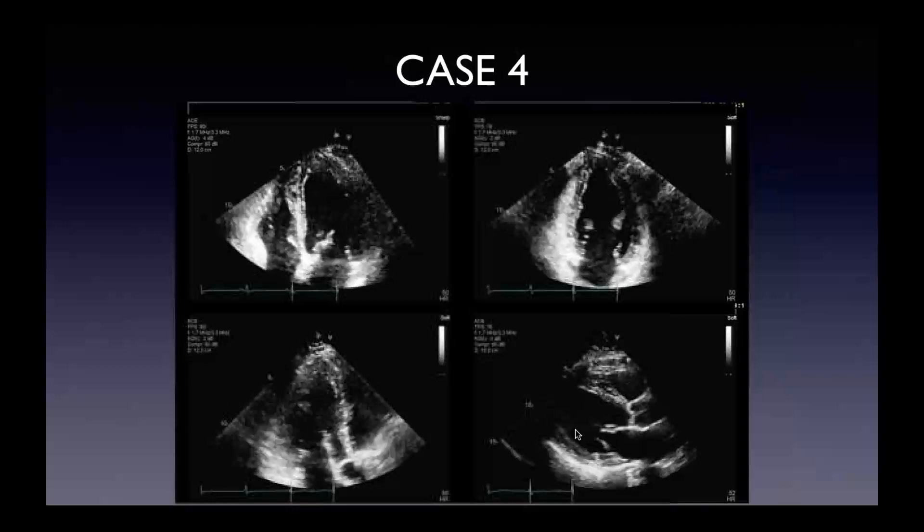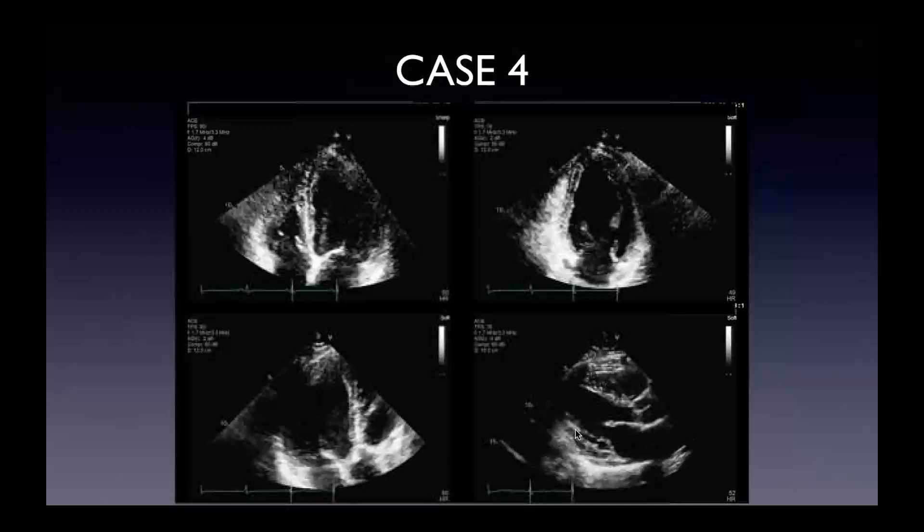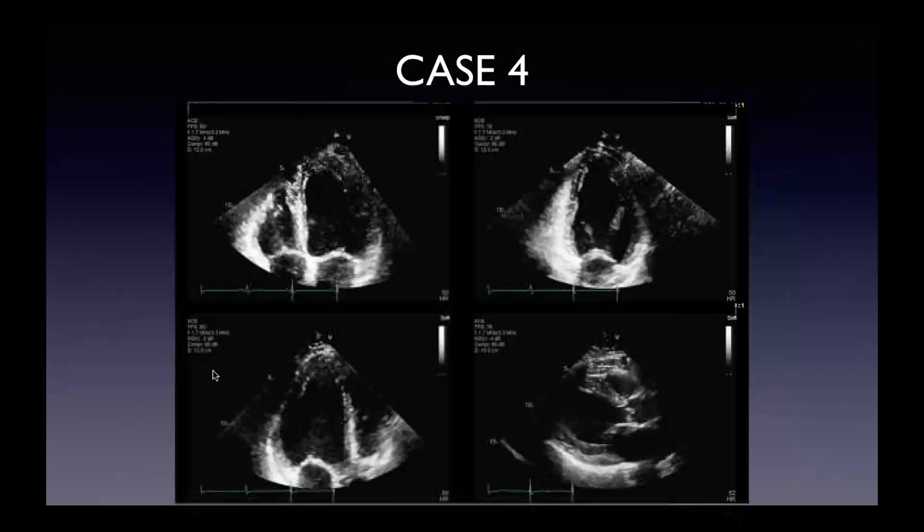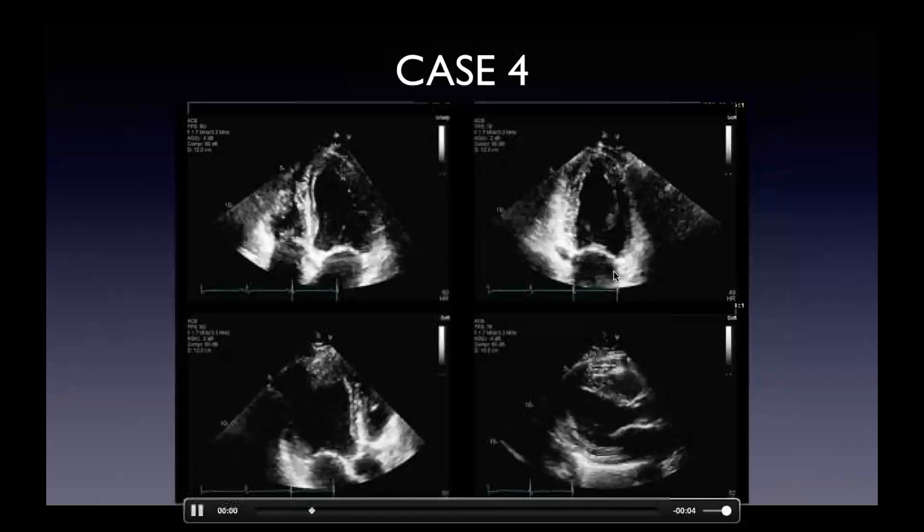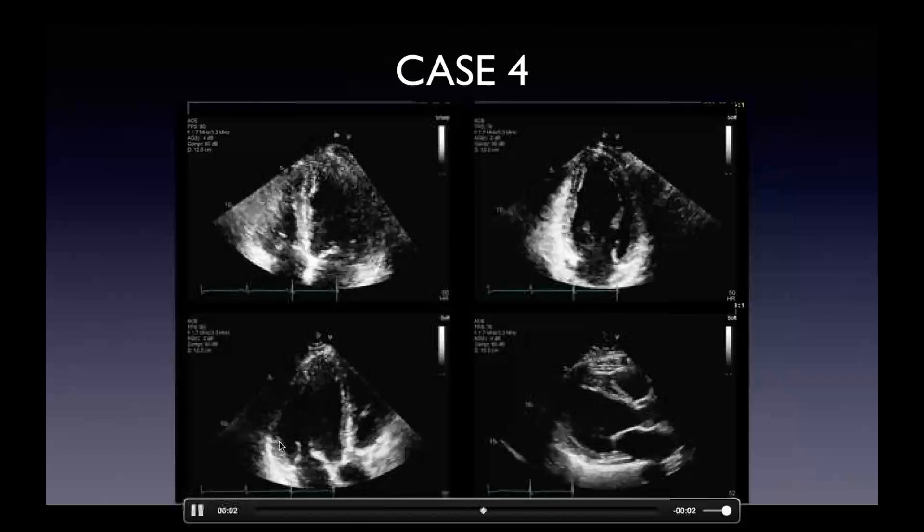Here's a fourth case — a patient with pretty decent endocardial definition. Overall maybe good enough for qualitative assessment, but probably not good enough for quantitative EF — you'd need to see a bit more of that lateral wall here. The two-chamber view is actually pretty good, not foreshortened. You lose that inferolateral wall on the three-chamber view.